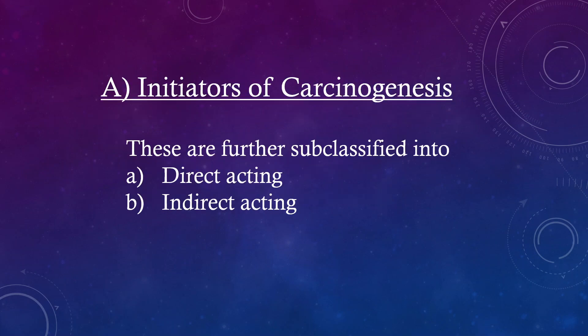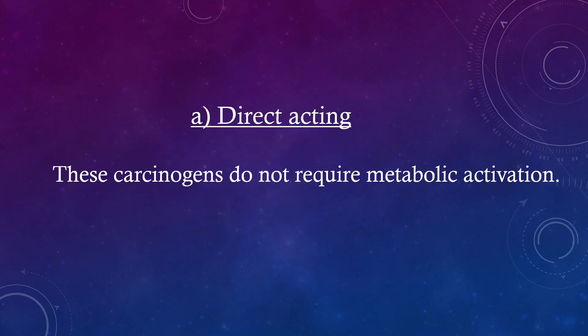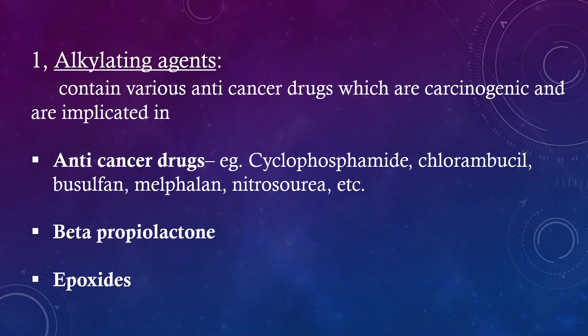Initiators of carcinogenesis are further subclassified into direct acting and indirect acting. Direct acting carcinogens do not require metabolic activation. The first subtype is alkylating agents, which contain various anti-cancer drugs that are carcinogenic. Examples include cyclophosphamide, chlorambucil, busulfan, melphalan, nitrosourea, etc.